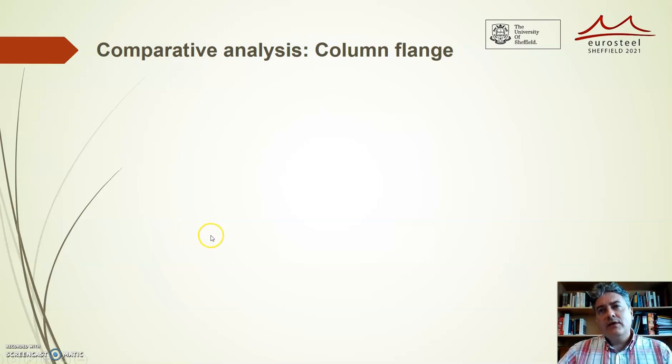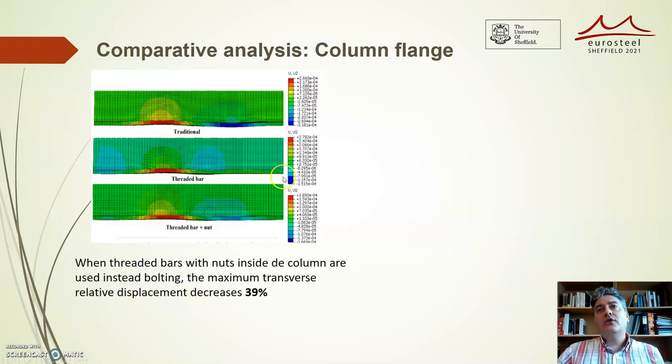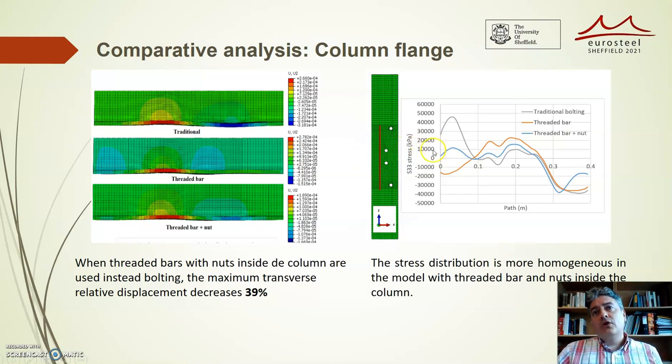Considering the study of the deformational behavior of the column flange, when threaded bars with nuts inside the column are used, the maximum transverse relative displacement decreases about 40% with respect to the model regarding traditional bolting. The stress distribution in the column flange is again more homogenous in the model with threaded bars with nuts inside.